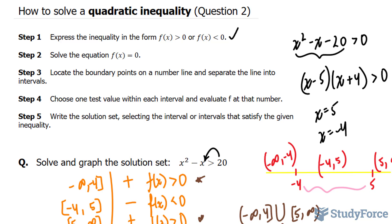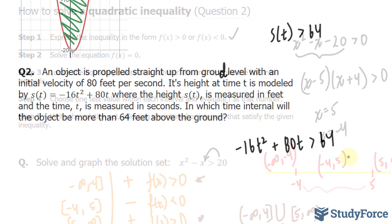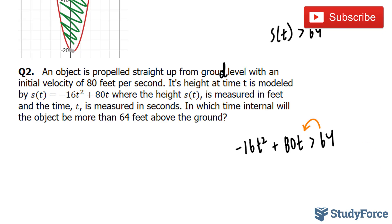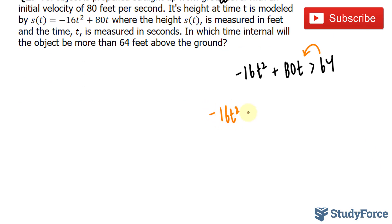Let's start with step number 1, which says express the inequality in the form f(x) is greater than 0 or f(x) is less than 0. So let's go ahead and do that. All you have to do is bring the 64 over to all the other terms, and you end up with negative 16t squared plus 80t minus 64, and all of this is greater than 0.